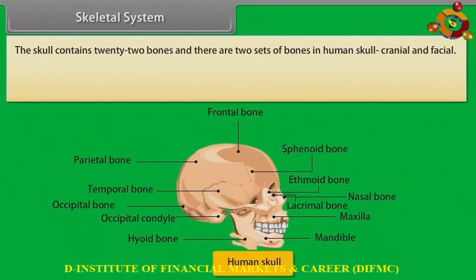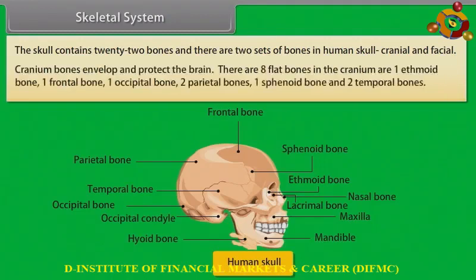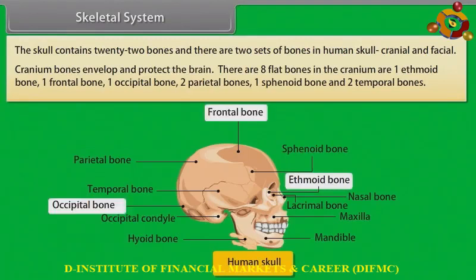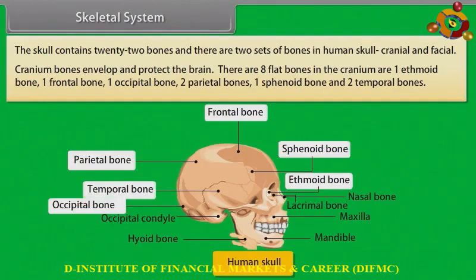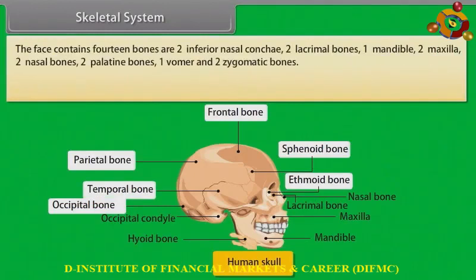The skull contains 22 bones, and there are two sets of bones in the human skull: cranial and facial. Cranium bones envelope and protect the brain. There are eight flat bones in the cranium: one ethmoid bone, one frontal bone, one occipital bone, two parietal bones, one sphenoid bone, and two temporal bones.